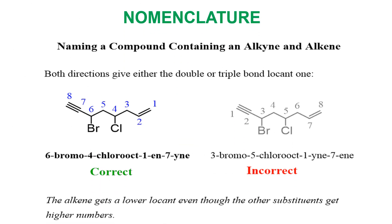Looking at a typical naming example, we can see that we have two functional groups — a double bond and a triple bond. Whenever we are naming, we are going to give the double bond priority over the triple bond. That's why the correct name of this compound starts with the carbon that bears the double bond. That's why the name is 6-bromo, 4-chloro, octa-1-en-7-yne, because the double bond is at carbon number 1 while the triple bond is at carbon number 7. Naming the triple bond first and giving it priority would be incorrect.